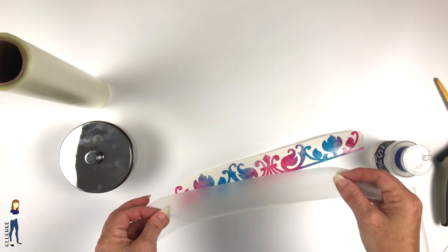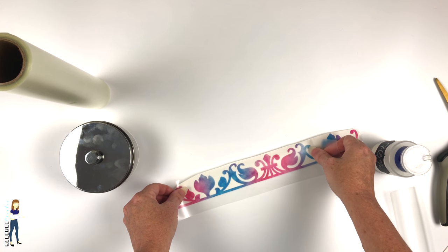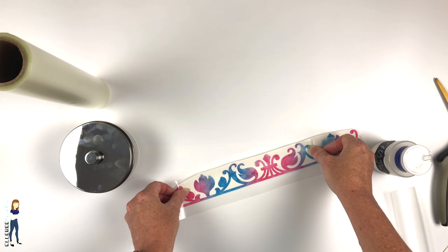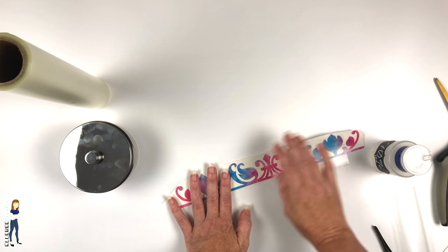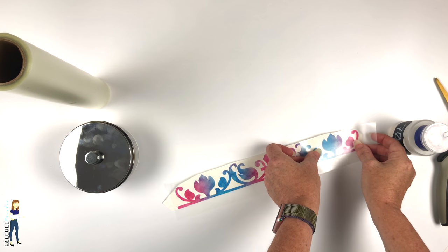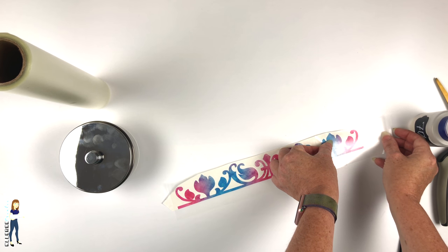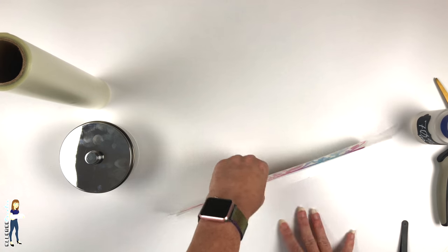I will see this. I had a girl ask me the other day—she said, you know, when you trim off your pieces that you don't need to use, how do you save them? Because the app tape doesn't come on a backing.